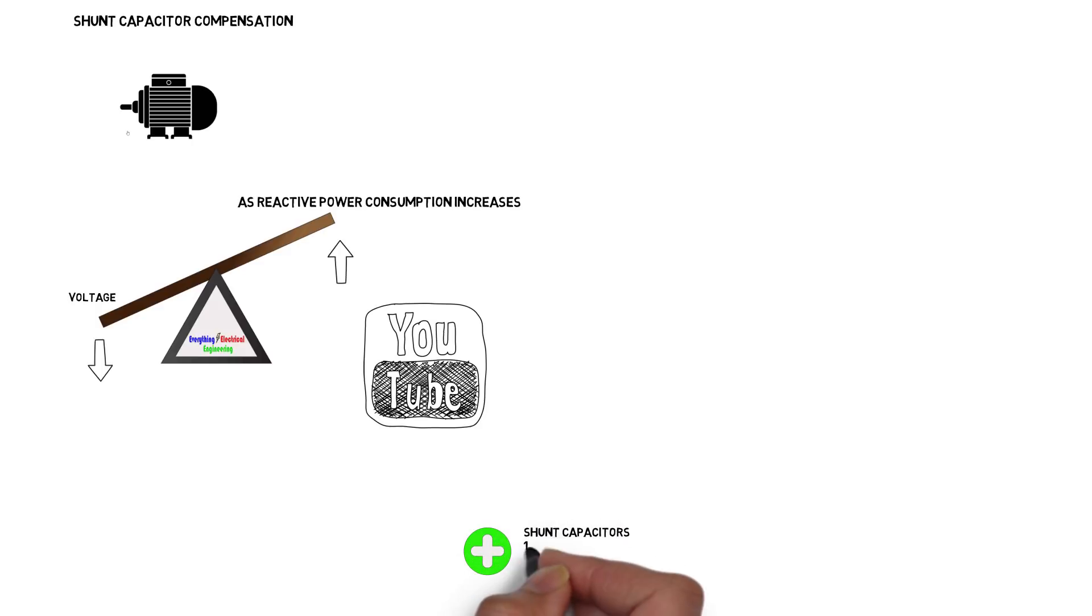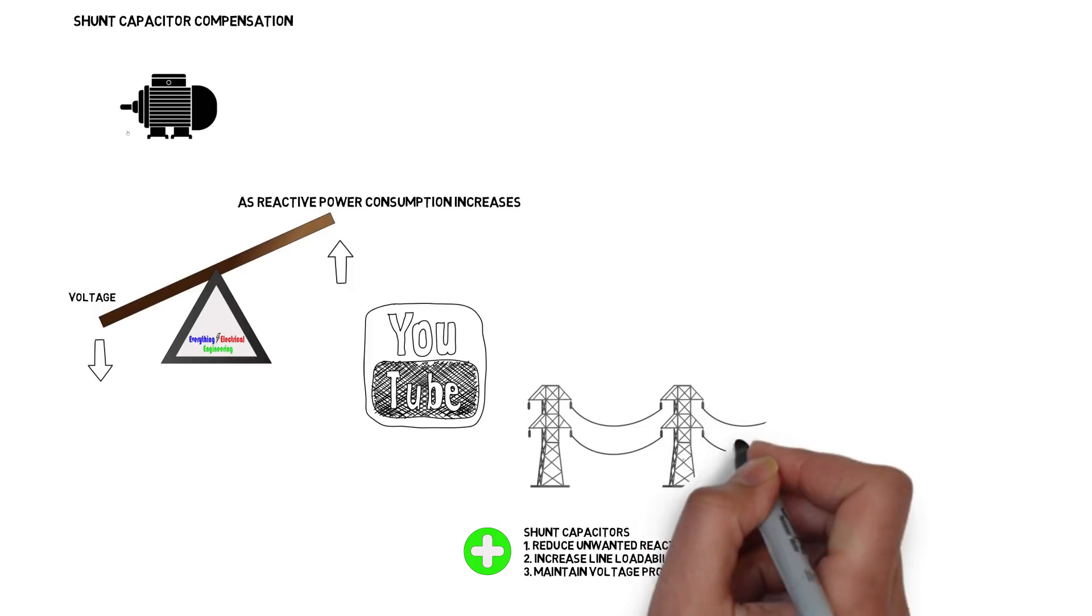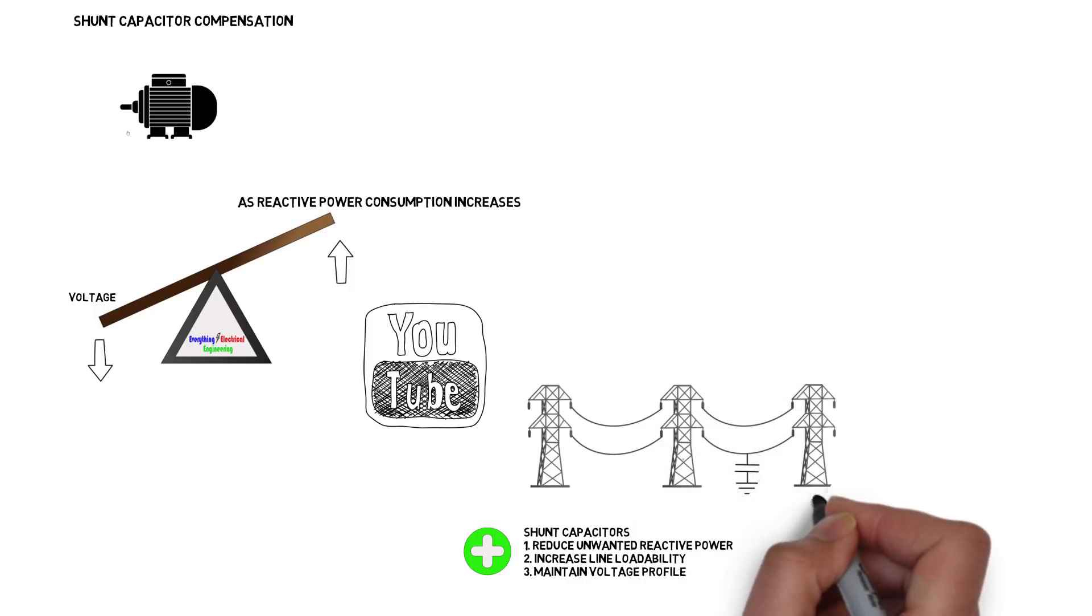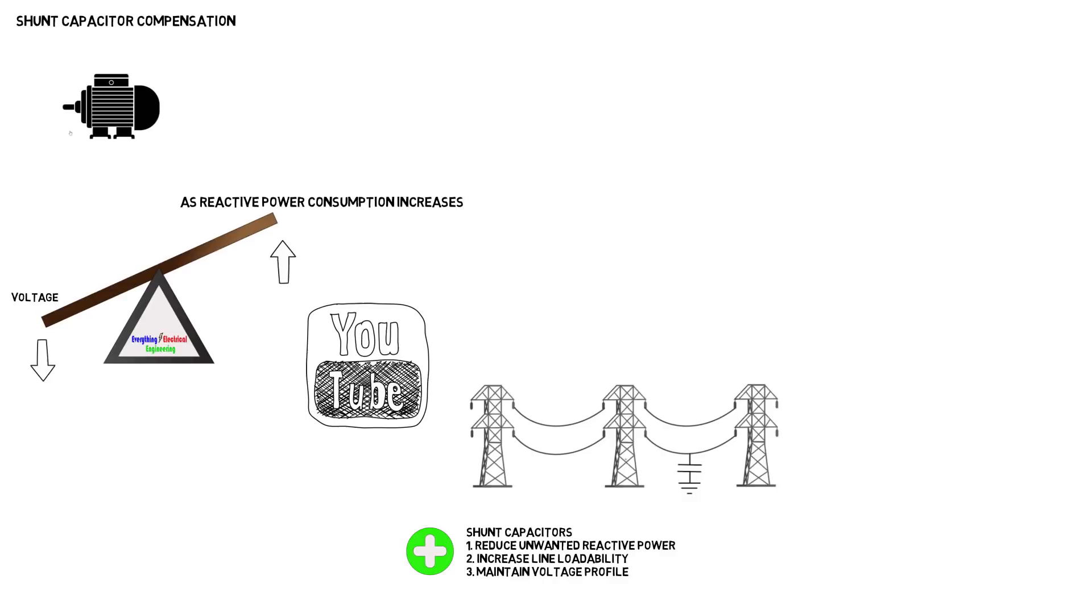Shunt capacitors provide reactive power to offset the reactive power absorbed by the loads and maintain a pre-set voltage at the receiving end terminals. Capacitors are usually connected directly to the bus or to the tertiary windings of a transformer and installed along the route to minimize the voltage drop and losses.